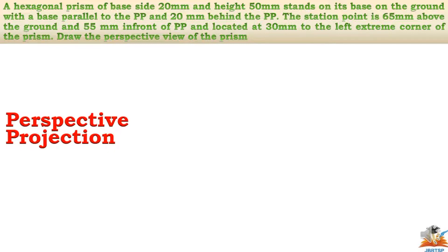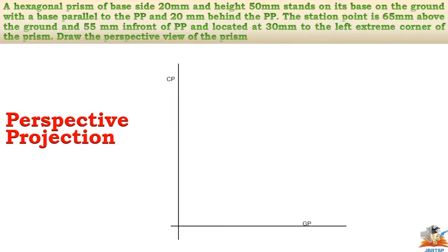The first step is to draw the ground plane and the center plane. GP stands for ground plane and CP stands for central plane. Draw the horizontal line, which should be at the distance from the ground plane to the station point.